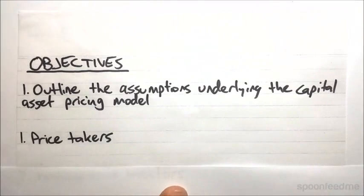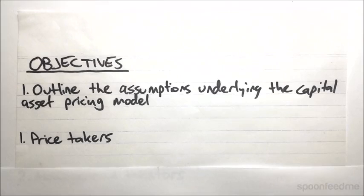First up, we assume that investors in the market are price takers. What this means is that no particular investor is able to influence prices through their actions. In real life, we do see that people with particularly large amounts of money can influence prices by buying or selling in huge amounts. We're going to assume that nobody has that power.